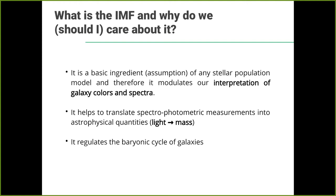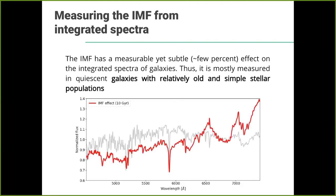The last point is more related to the physics itself: the IMF is somehow regulating the baryonic cycle in galaxies. It's not only a tool we put in our models, but it also controls the number of massive stars and therefore the effect of stellar feedback, the amount of stellar ejecta in your galaxy. For the very low mass stars, they live for many gigayears and also control the mass budget in your galaxy. So from both a practical and physical point of view, the IMF is key to understanding galaxies where we cannot resolve individual stars.